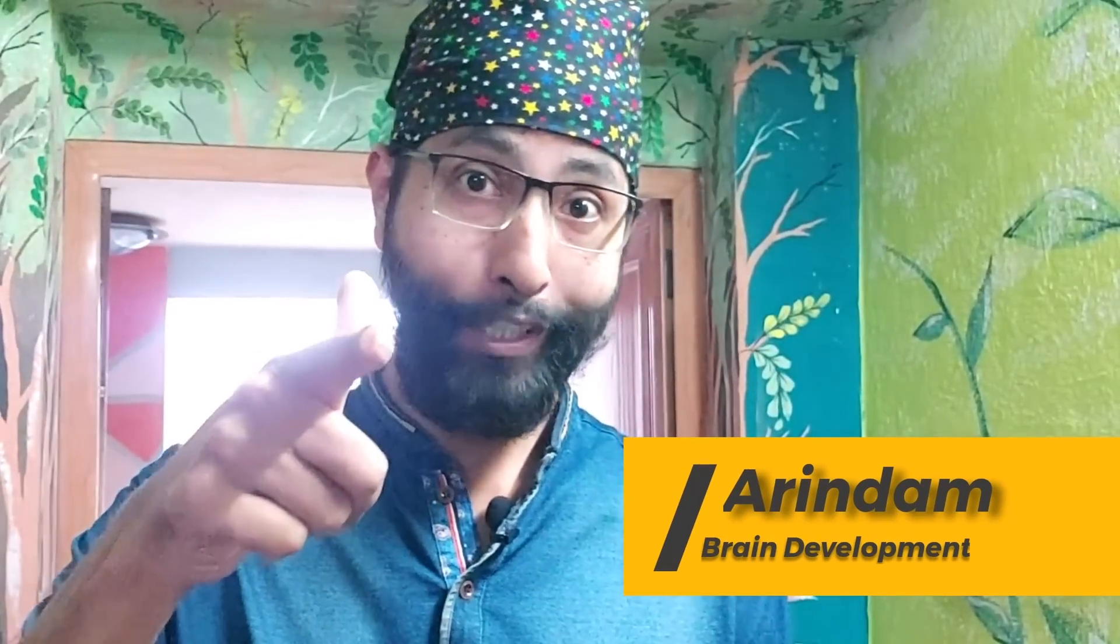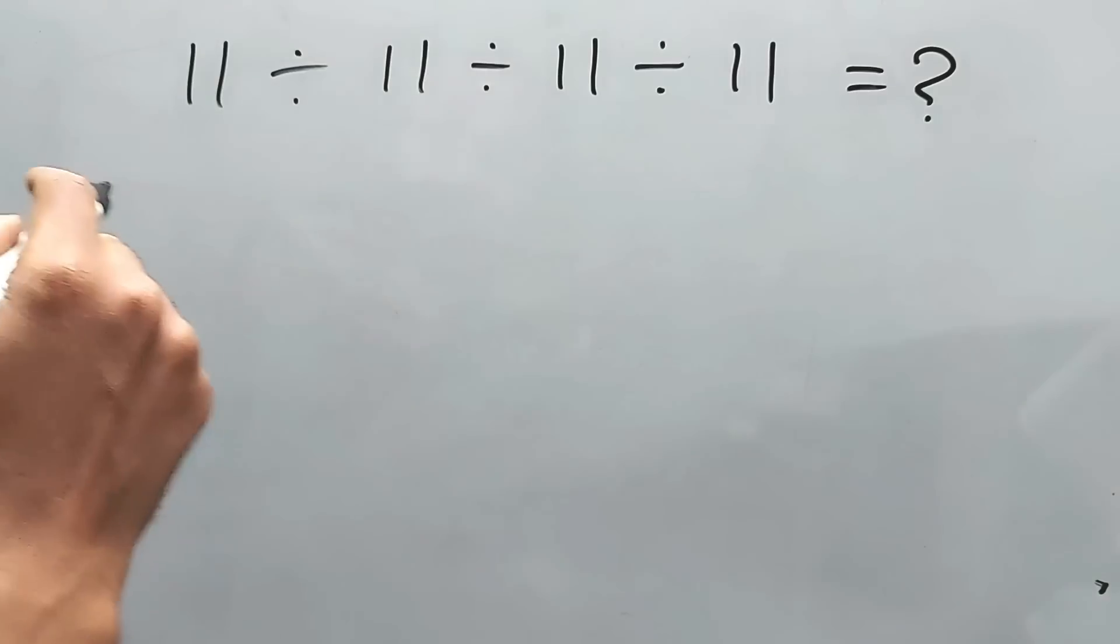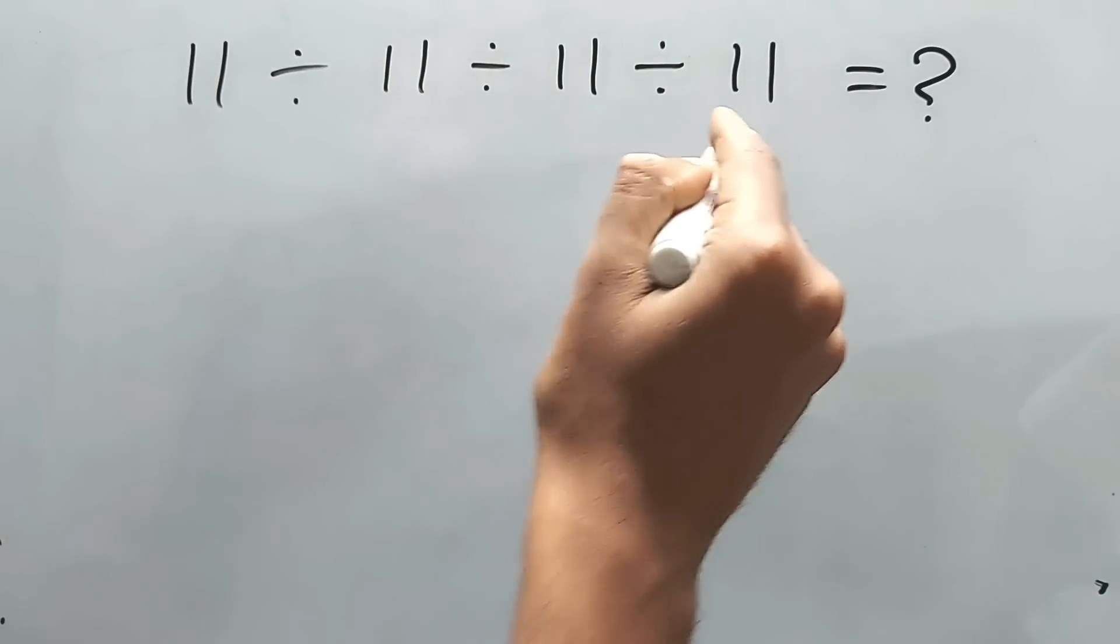Hi guys, this is Arindam. You're watching Brain Development. Today's problem: 11 divided by 11 divided by 11 divided by 11. The approach should be whenever you get a problem, whenever you see something, just stop it right there. You've got the problem, now you try it by yourself.